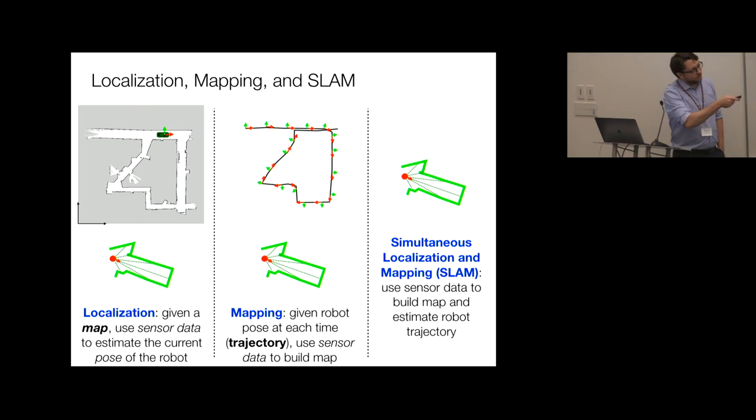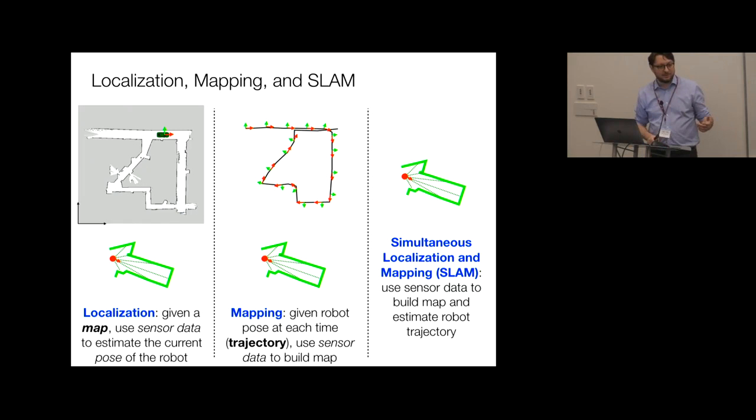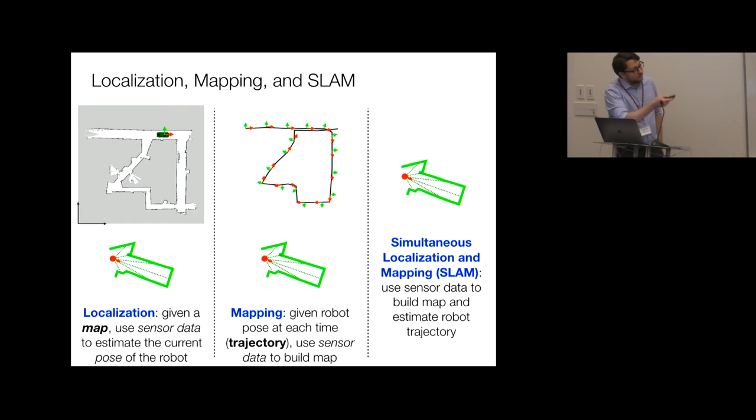What we'll discuss today is a combination of both: SLAM. Here the robot navigates in an unknown environment without any prior knowledge — no known trajectory, no prior map. The simultaneous localization and mapping problem uses sensor data to build a map and simultaneously estimate the trajectory of the robot.